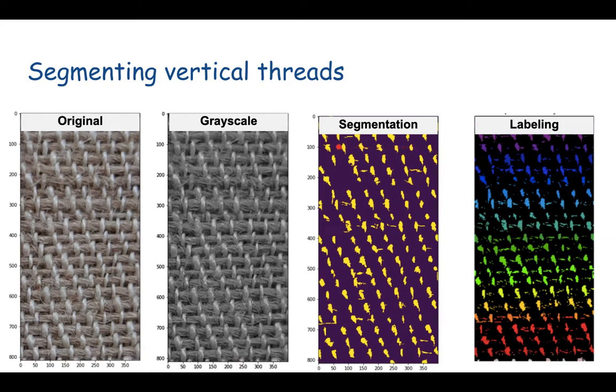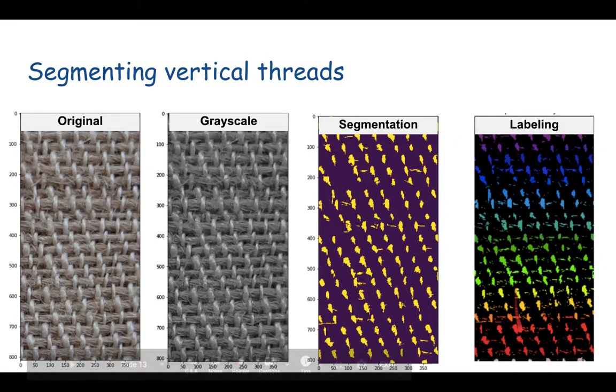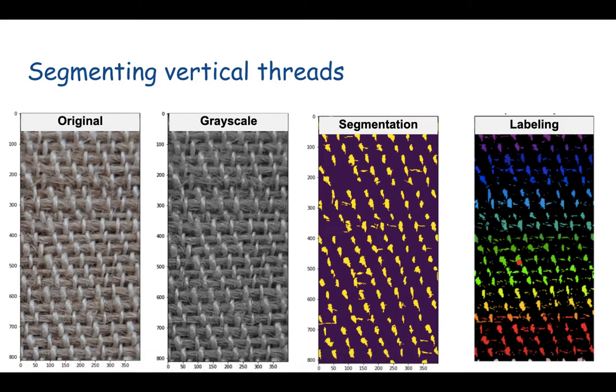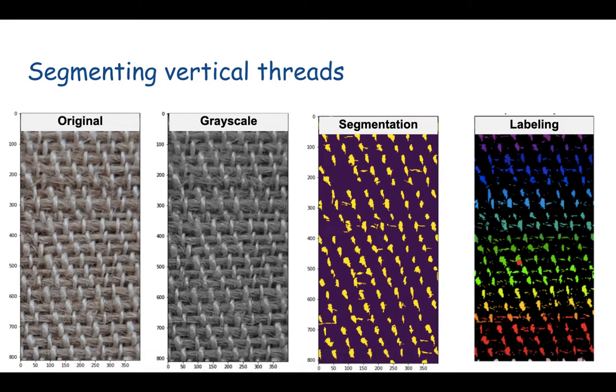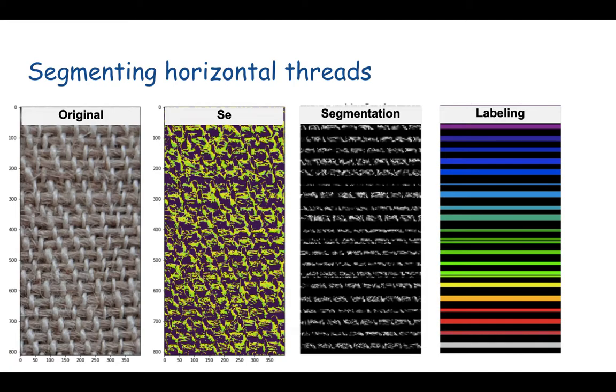On the rightmost side, this is where we have done the labeling. We have these highlighted areas shown here. Now we want to count them - how many are there in these many pixels or millimeters. In this stage we are labeling each of those blobs of yellow. After we label them we can then count them. That was what was done for the vertical threads.